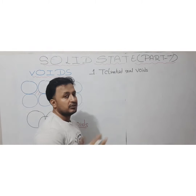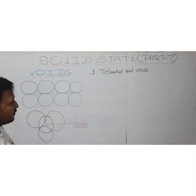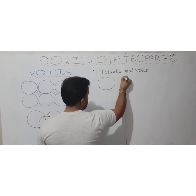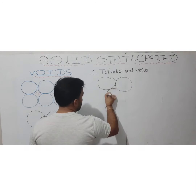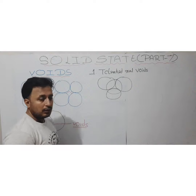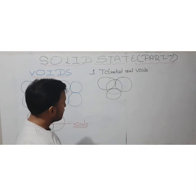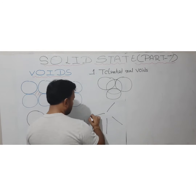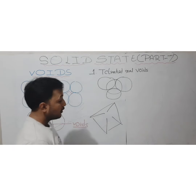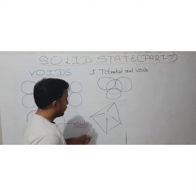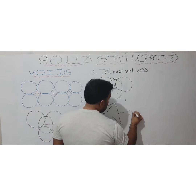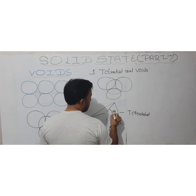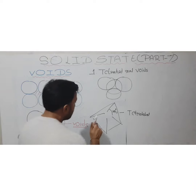Tetrahedral void gets its name from the shape generated due to the formation of such voids. Suppose we have one spherical particle, another one, a third one, and a fourth one coming at the top of the empty space. The special shape generated is known as the tetrahedral shape, which you have studied in grade 11, with a bond angle of 109.5 degrees.